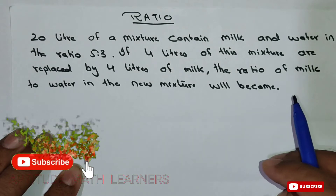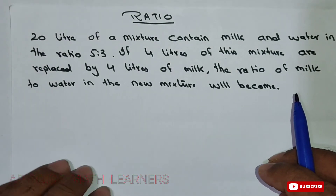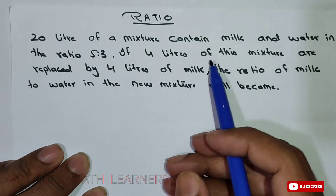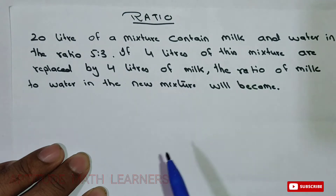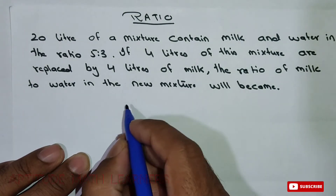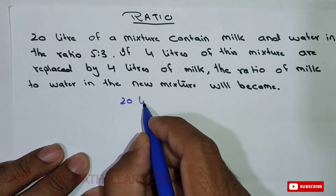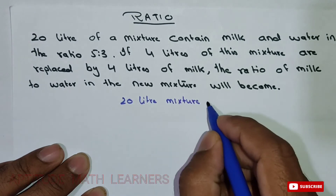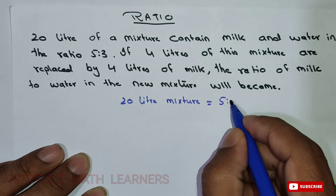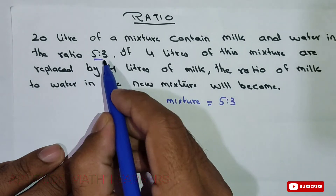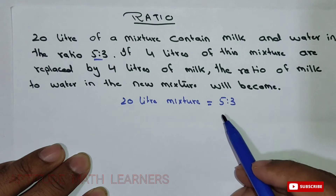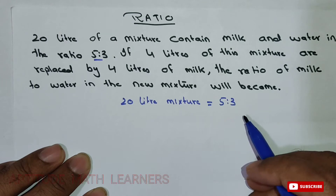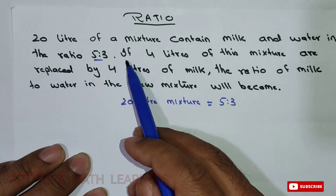In the question, we have been asked to replace 4 litres of the mixture. We are having a 20-litre mixture in the ratio 5:3, and this mixture contains milk and water in the ratio 5:3.